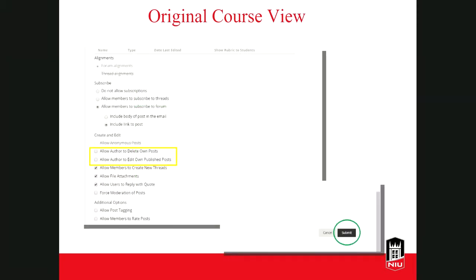Some other settings include whether you want to allow students to subscribe to the forum, whether you want students to be able to delete or edit their own posts. Note that if you force students to post to the forum before they can see others' posts, they won't be allowed to delete their first posts. You can also allow or restrict file attachments, post tagging, and post ratings. Finally, you could force moderation of posts, meaning you would have to manually approve each post before it appears in the discussion board. There are pros and cons — you can review posts before the class sees them, but it may delay students' ability to reply to each other. Once you enter all the necessary information and settings, click Submit to proceed.